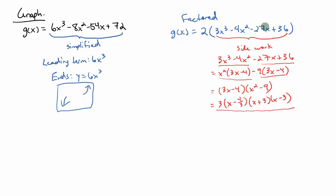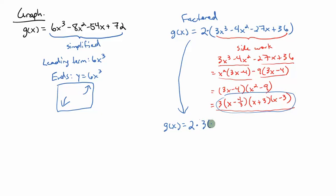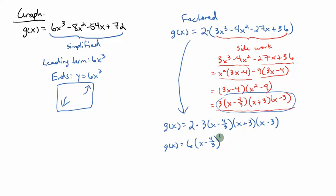That's how the parentheses factor. So now I can come back to my original problem and rewrite it. I've got 2 times what's in the parentheses. I'll simplify: 2 times 3 is 6, so I've got 6 times x minus 4 thirds to the first power, times x plus 3 to the first power, times x minus 3 to the first power. I wrote those exponents in because they represent the multiplicities.